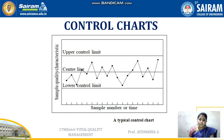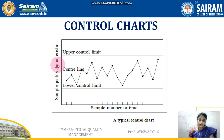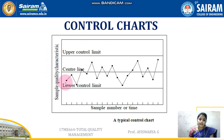The name itself says that we need to plot a chart with respect to the X and Y axis. You can see a typical control chart over here. Here I have mentioned the sample number or time and the sample quality characteristics. Both have been identified and plotted as a graph. In this, the lower control limit, center line, and upper control limit have been mentioned. In the respective time, what is the quality characteristic obtained — we need to plot a point and mark it.